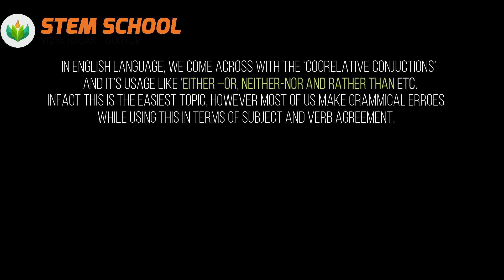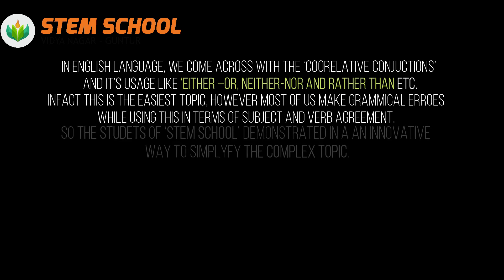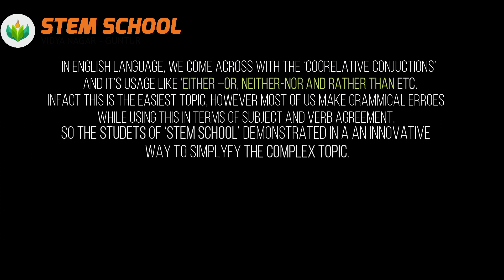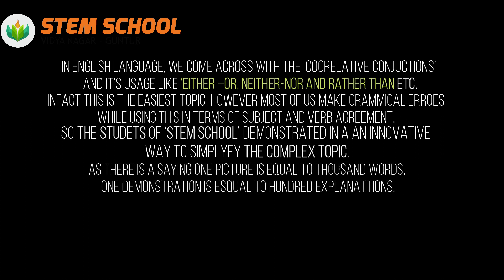In the English language, we come across correlative conjunctions and their usage, like either/or, neither/nor, and rather than, etc. In fact, this is the easiest topic. However, most of us make grammatical errors while using them in terms of subject-verb agreement. So the students of STEM school demonstrated in an innovative way to simplify this complex topic. As there is a saying, one picture is equal to 1000 words — one demonstration is equal to 100 explanations.